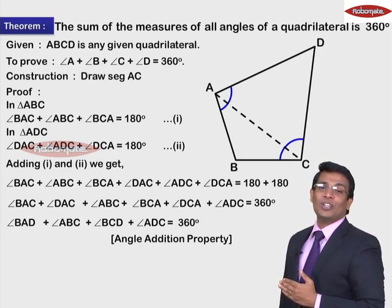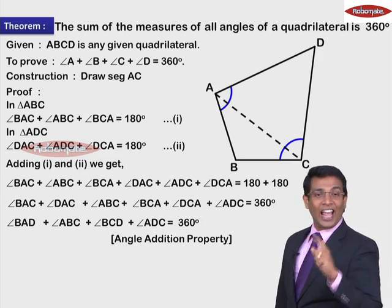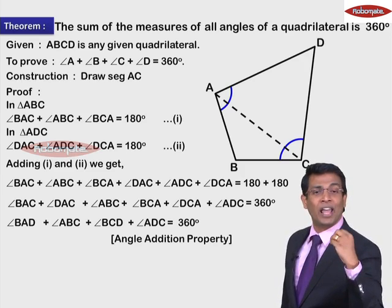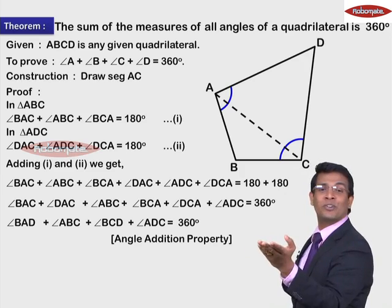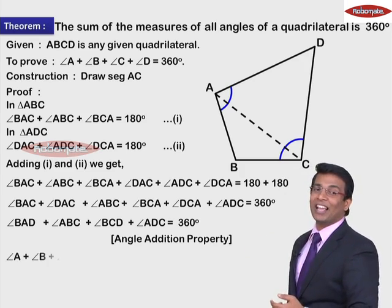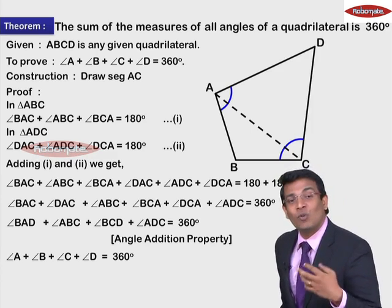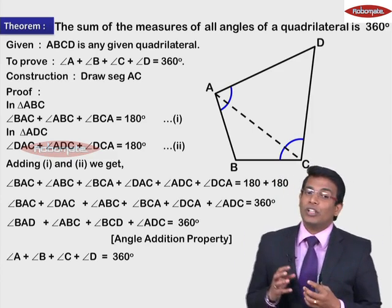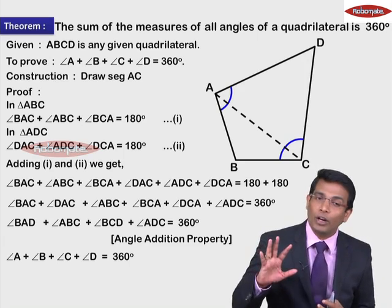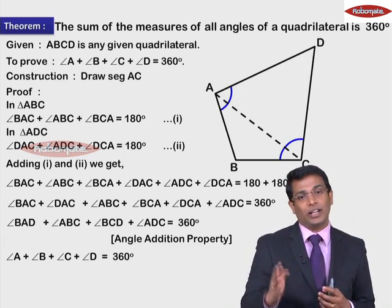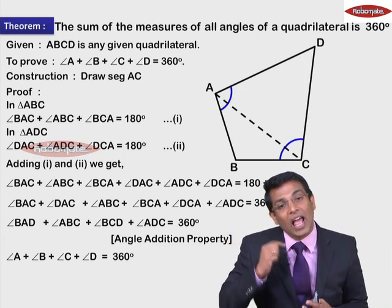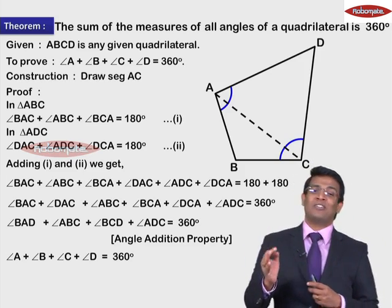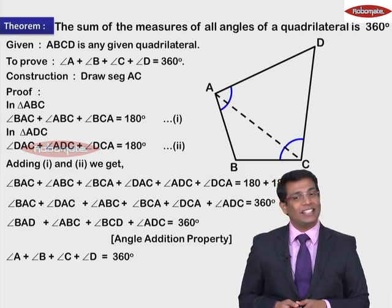Now see what you got. Angle BAD is nothing but angle A. Angle ABC is nothing but angle B. Angle BCD is nothing but angle C. And angle ADC is nothing but angle D. And you got the sum of all these angles to be 360 degrees. So the next statement is: angle A + angle B + angle C + angle D = 360 degrees. You got the proof! So whenever you use this theorem in any problem, you know the quadrilateral's angle sum equals 360 degrees, and you write the reason as the angle sum property of a quadrilateral.